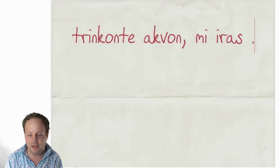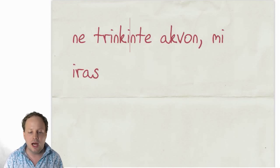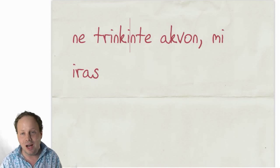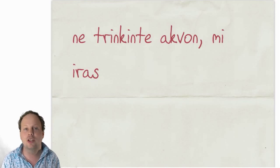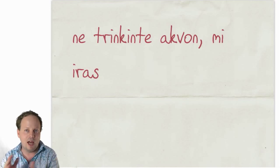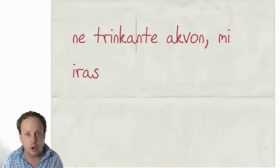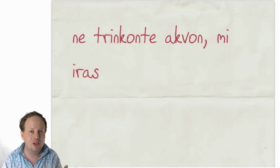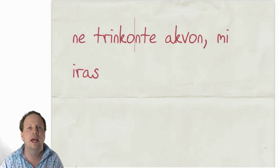Those are the most common forms, but you can also see them in negative. For instance, NE TRINKINTE AKVON MI IRAS — 'not having drunk water, I go' — or without drinking water, I go to the shop. That would be the best way to translate it into English. NE TRINKANTE AKVON MI IRAS AL LA BUTIKO means 'while not drinking water, you go to the shop.' And NE TRINKONTA AKVON MI IRAS AL LA BUTIKO means 'while not going to drink water, I go to the shop' — so you're going to the shop for another reason other than drinking water. It's really complex in English, but in Esperanto, once you get it into your head, it makes sense.